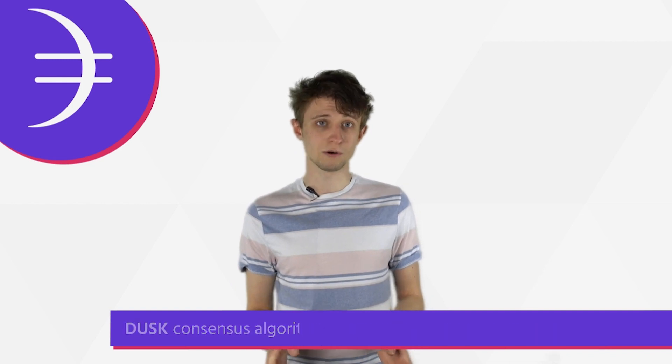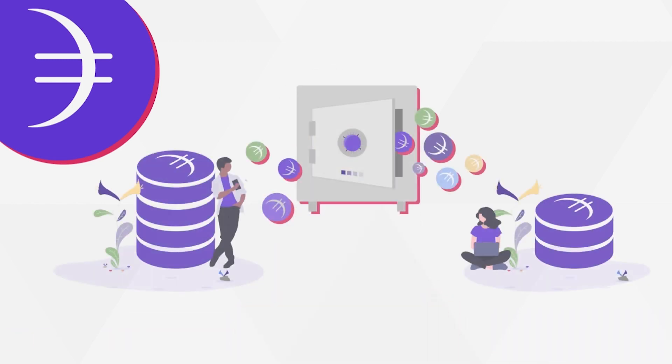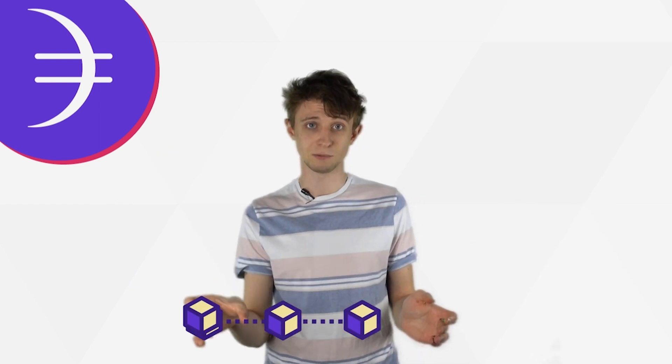So instead of using computer power, we let the validators of Dusk Network lock up their Dusk tokens and then they get the ability to vote on blocks that can be added to the blockchain. Instead of trying to find a solution to a puzzle, the Dusk Network validators work together to try and agree on a specific block towards which they then create a certificate. And the certificate basically says that the block is following all of the rules.